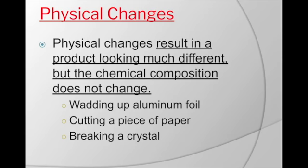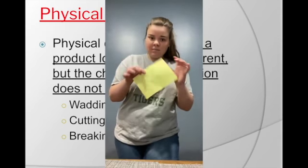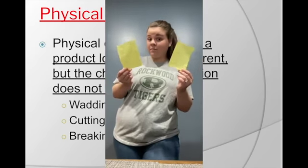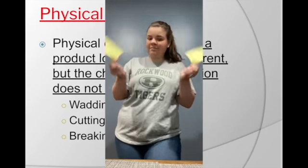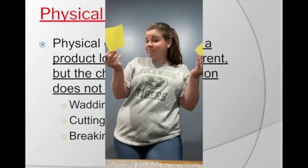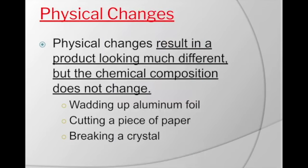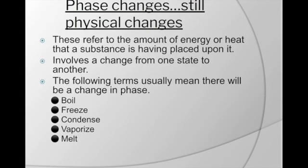For example, if I have this piece of paper and I tear it in half, it is still paper. It didn't magically change to wood or air — it just changed how it looked, but it's still paper. That would be a physical change. Other examples include breaking a crystal, breaking glass, wadding up aluminum foil, or cutting a piece of paper.